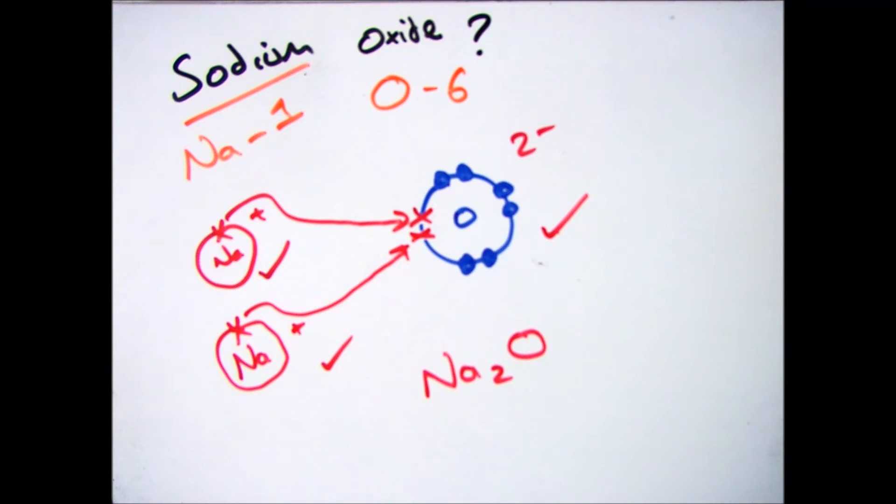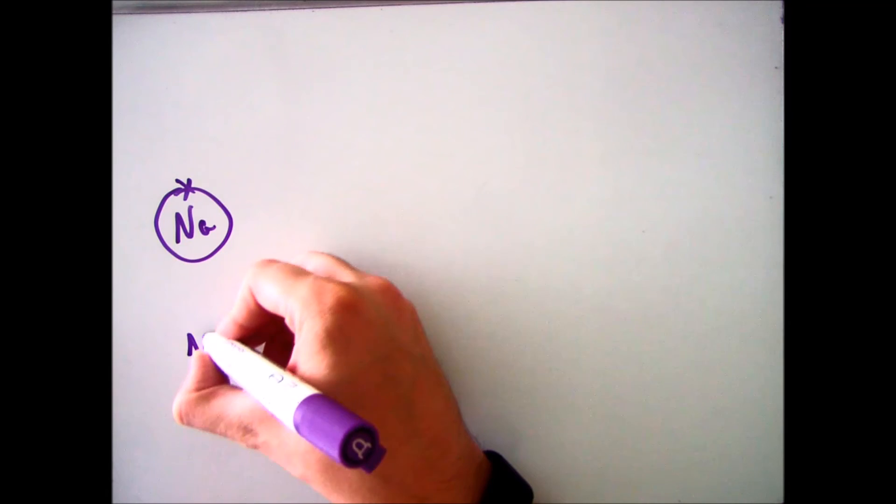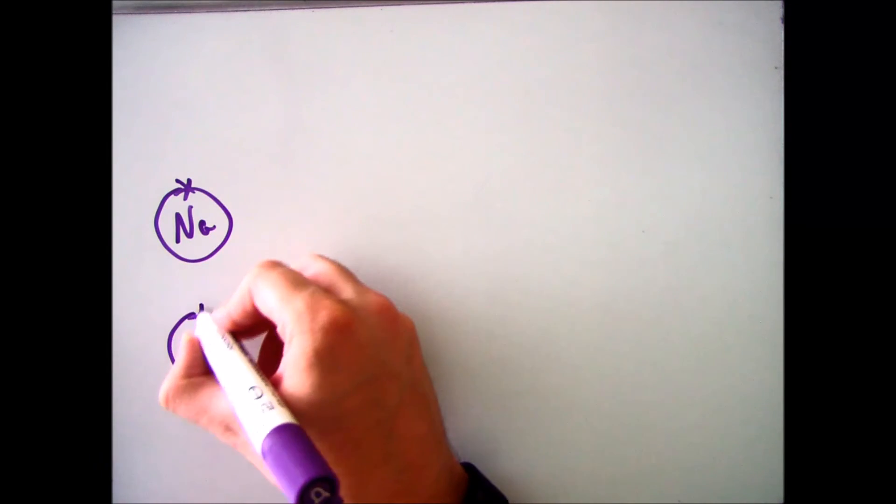Again, once you've done this, you can actually draw the electronic configurations of the ions, which is what this question will be asking for. So to do that, draw your sodiums again. The fact that you have two different sodiums and one oxygen.